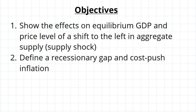G'day guys, we saw what happens to equilibrium GDP and the price level when aggregate demand is shifted to the right, resulting in demand-pull inflation. Now we're going to have a look at when aggregate supply actually gets shifted to the left. This happens as a result of what we call supply shocks, and we'll show that it results in a recessionary gap and cost-push inflation.